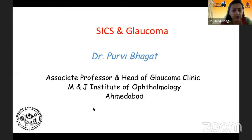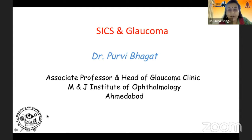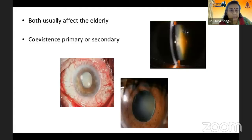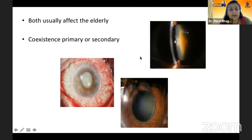Thank you for that introduction, and I'm glad that among the inclusion of young ophthalmologists you have included me today. I'll be talking on SICS and glaucoma. We all know that both these conditions commonly affect the elderly, and they can be independent entities within the same eye, or they can be a result of each other, or they can be associated presenting features of some local or systemic comorbidity, so their presentations could be very varied.